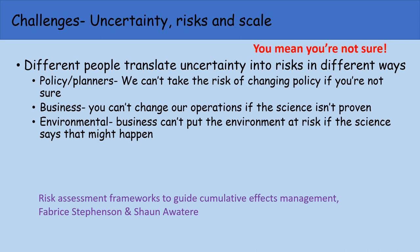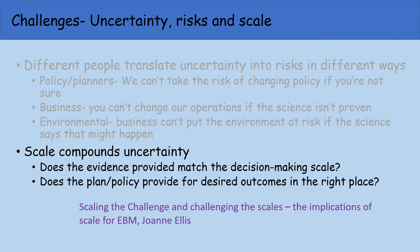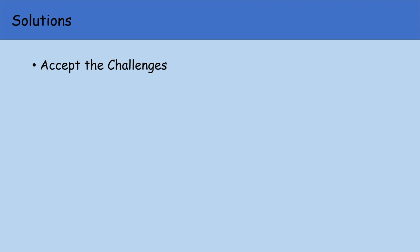As soon as a scientist says they're not sure what will happen, people respond in different ways — or as Sean put it, their perceptions depend on worldview and positionality. A policy planner might say we can't take the risk of changing policy if you're not sure. A business person: you can't change our operations if the science isn't proven. An environmentalist might say business can't put the environment at risk if the science says that might happen. And all of this is compounded by the issue of scale — does the evidence provided match the scale at which the user will make decisions?